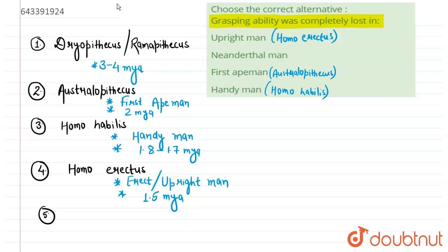And after these Homo erectus, there is Neanderthal man. They were here before one lakh years ago.